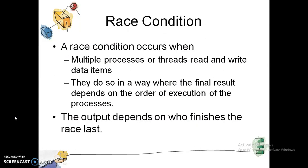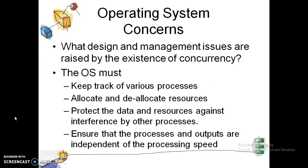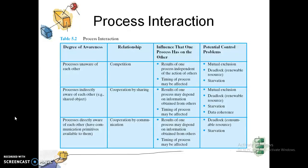As we have said, concurrence is concerned with the interaction of processes. So how do processes interact? There are three categories of process interaction. There are some processes that are unaware of each other, other processes are indirectly aware, and other processes are directly aware of each other.